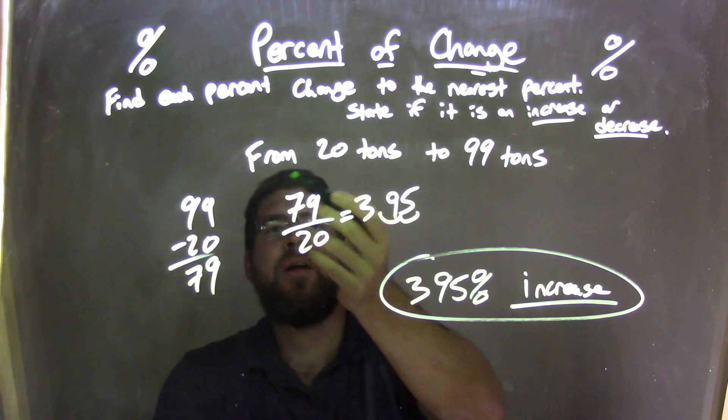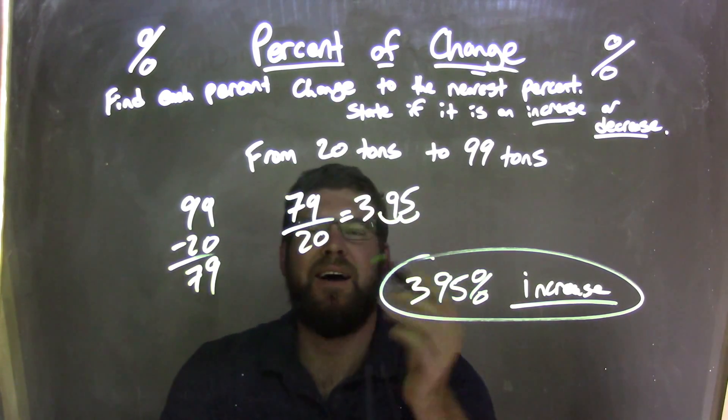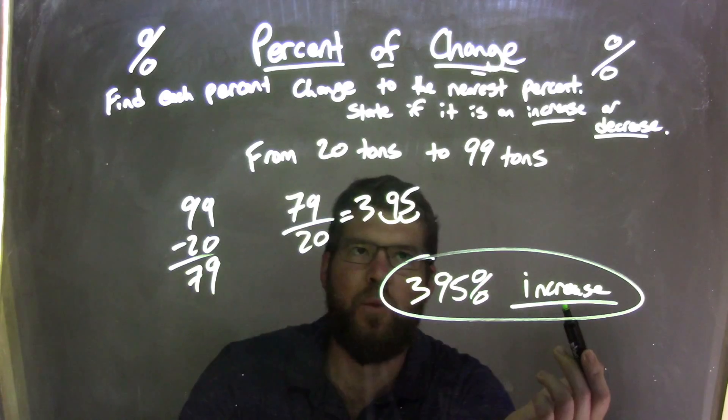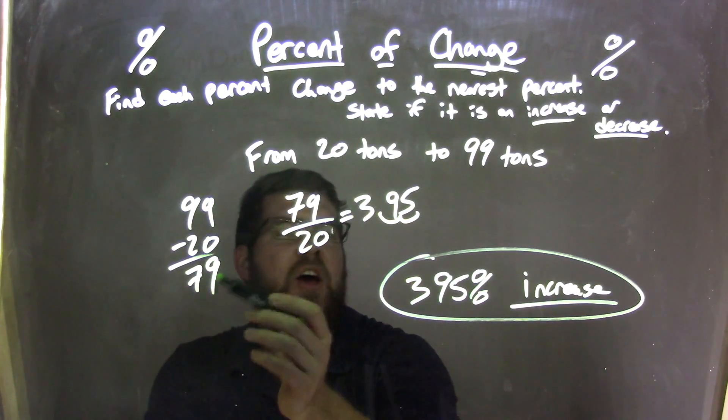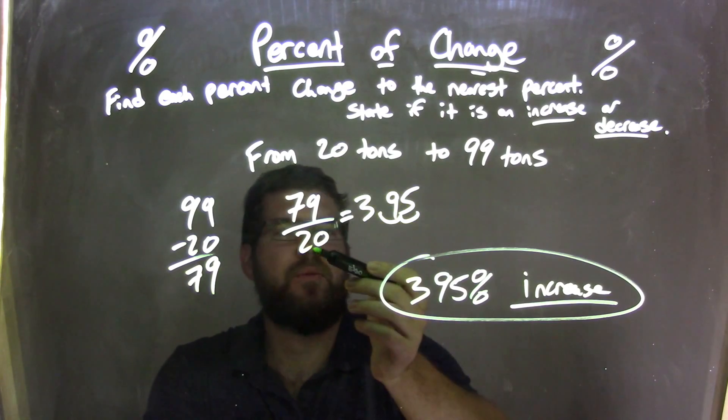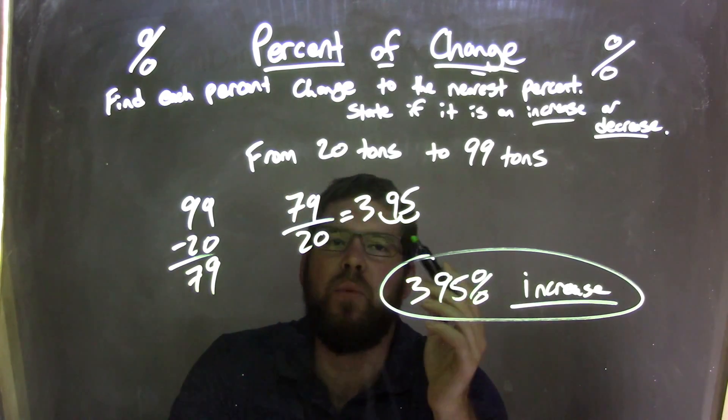So, let's recap. We started from 20 tons to 99 tons. We knew that was an increase. We then found the difference between the two. 99 minus 20 is 79. We took that 79 divided by the first number, which is 20, and we got 3.95.